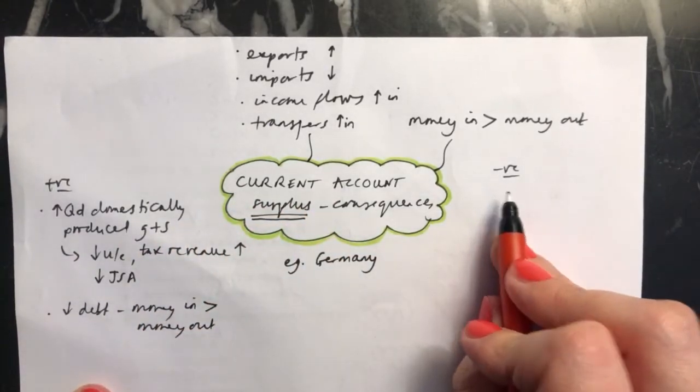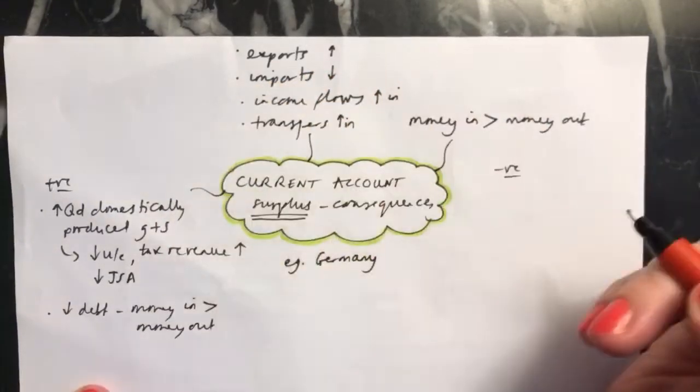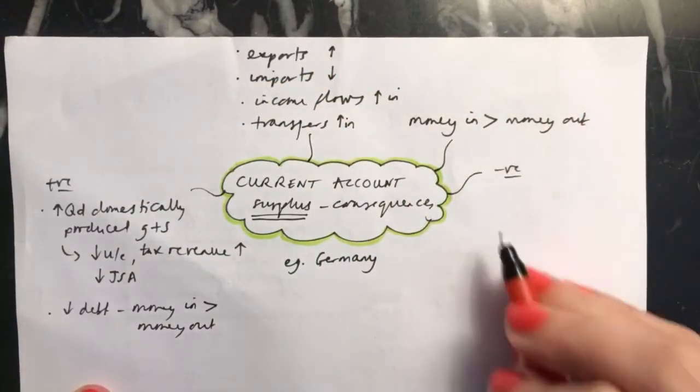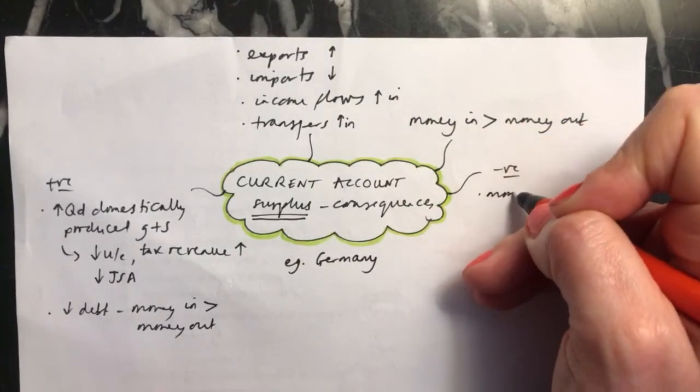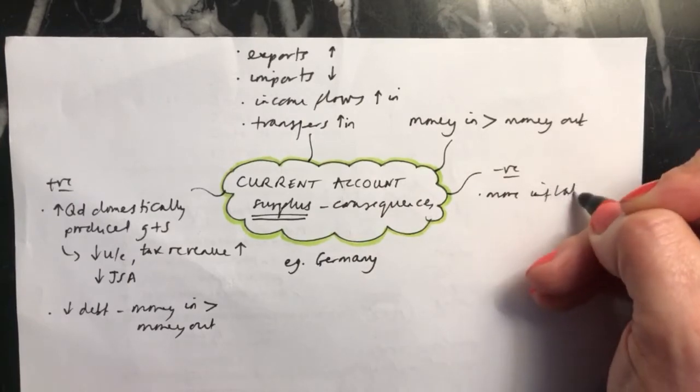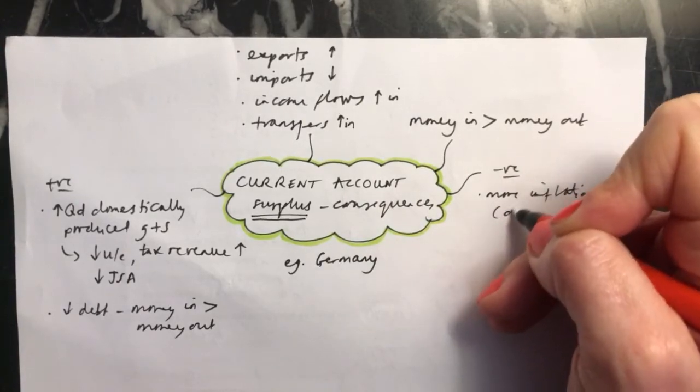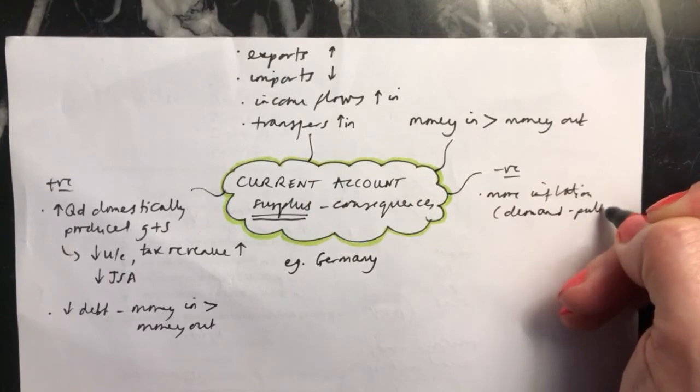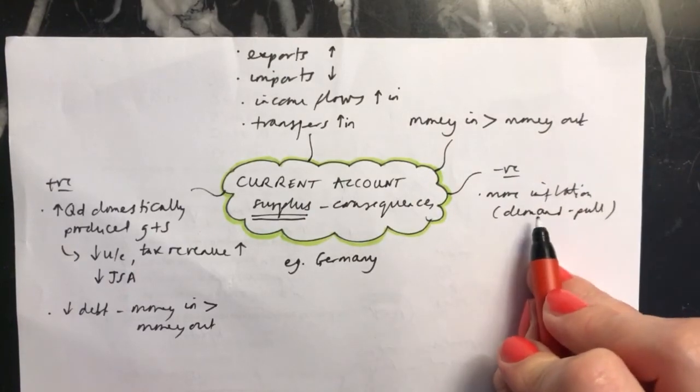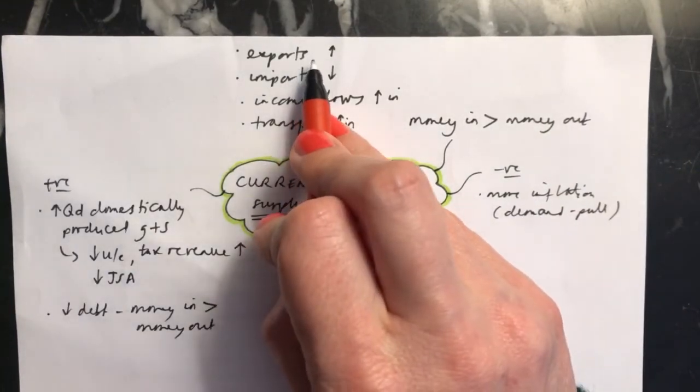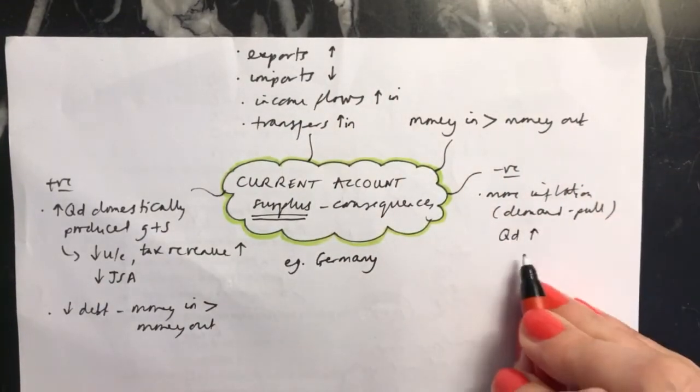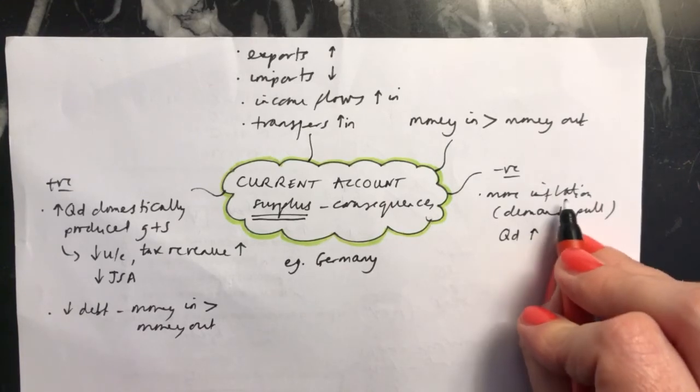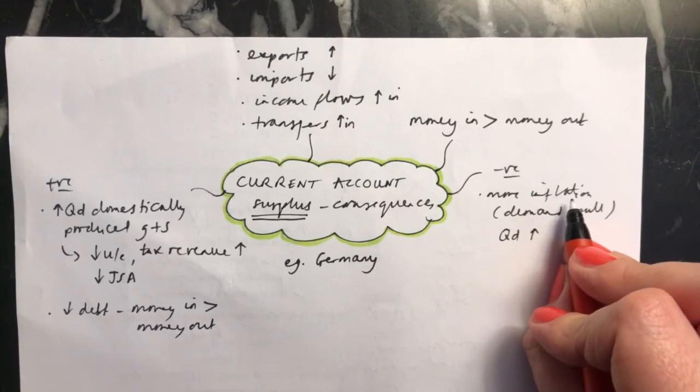Moving on to the negatives. They're not just good things about having a current account surplus. There can also be bad things as a result of this. One of them is that you might have more inflation. And this will be demand pull inflation. This is because as you're exporting more of your goods, there's more demand for your products. Quantity demanded has gone up and therefore demand overall for your products goes up. This can lead to demand pull inflation if you can't keep up production with the demand.